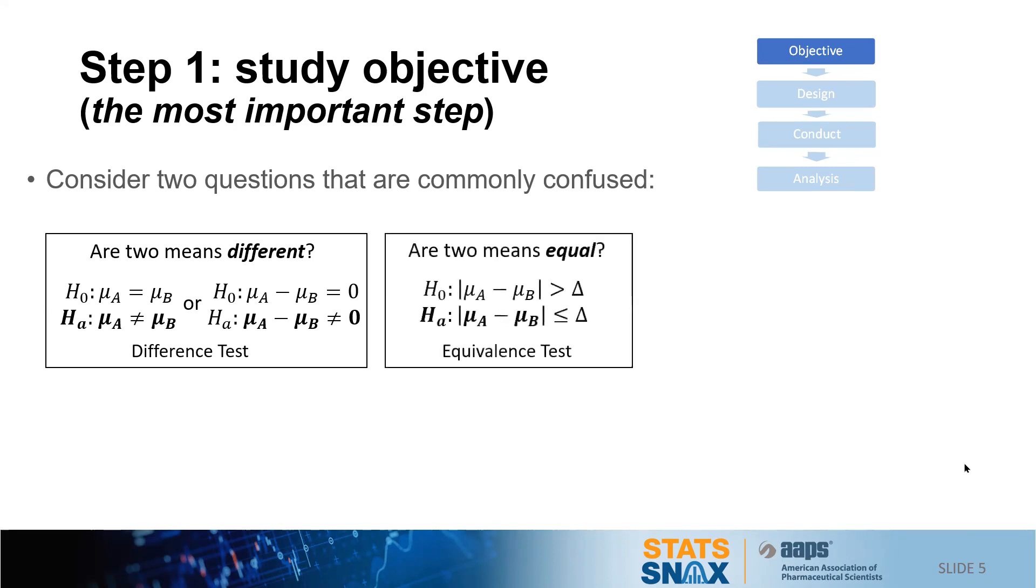Now this can be contrasted with what's called an equivalence test, and that test is meant to answer the question, are two means equal? Using the same parameters, that is the difference in means of A and B, we formulated it slightly differently. We're not looking for a zero difference, but we're looking to see whether a difference is within some pre-specified equivalence margin, which I symbolize as the Greek letter delta in this case.